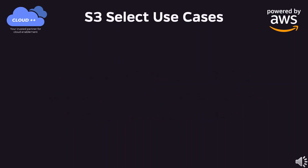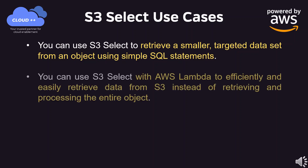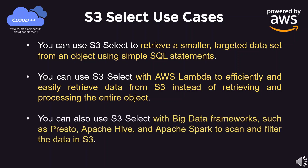S3 Select use cases: You can use S3 Select to retrieve a smaller, targeted data set from an object using simple SQL statements. You can use S3 Select with AWS Lambda to efficiently and easily retrieve data from S3 instead of retrieving and processing the entire object. You can also use S3 Select with big data frameworks such as Presto, Apache Hive, and Apache Spark to scan and filter the data in S3.